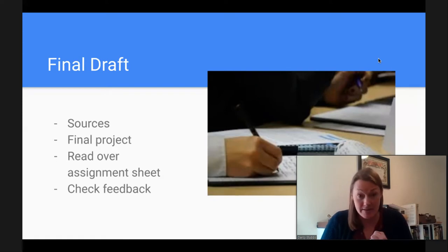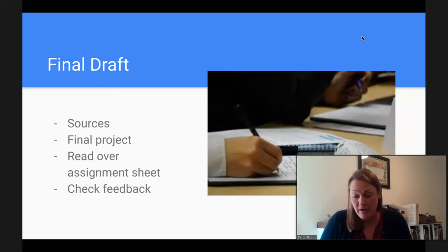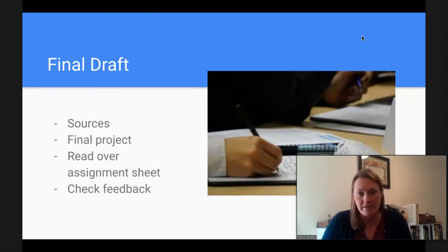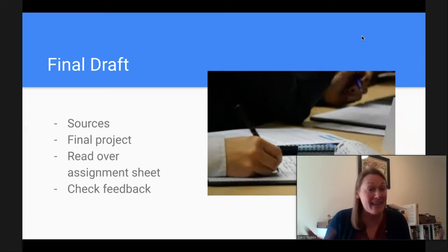Also add a section discussing what you've changed and why from the first draft to this final draft, and make sure you're talking about significance — why does this matter, why should people care about this project? Finally, the TAs and I tried to provide you with a lot of very specific feedback on the rough draft. Make sure you're checking that feedback and incorporating those changes into the final draft. We would be so sad if we read final drafts and saw the same mistakes and found you hadn't checked your feedback.